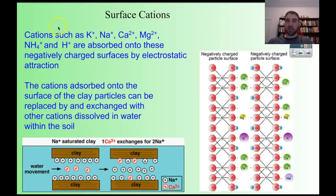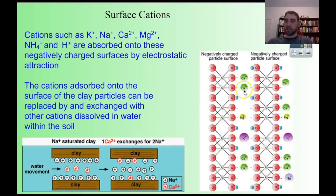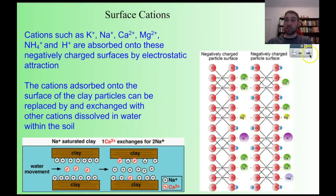On the negative surface charge you can get cations like potassium, sodium, calcium, magnesium, ammonium, and hydrogen. They can adsorb onto that negative surface. We can see the negative surfaces with those positive cations stuck there. They can be exchanged with the surrounding soil water — the ions can stick to the surface of the clay and then dissolve back into the soil water and be used by plants. That's what cation exchange is.